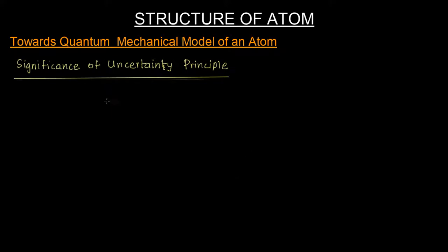We just saw that the mathematical formulation of the uncertainty principle is that delta x into delta v is greater than or equal to h upon 4 pi m.